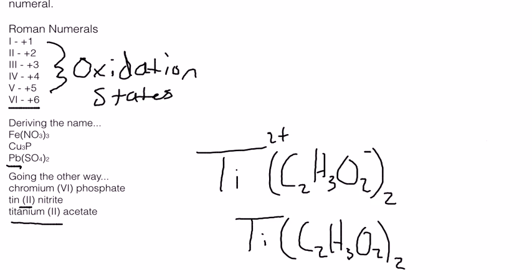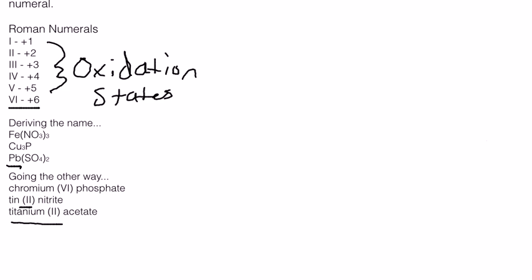So with these, you just need to make sure that you understand Roman numerals and what those charges represent. You have to be comfortable with finding oxidation states. The easiest way to solve these is to take some time and memorize all of the polyatomic ions and their oxidation states. It'll make it so much easier on you in the long run if you have those down.